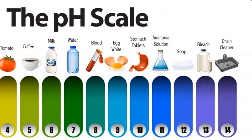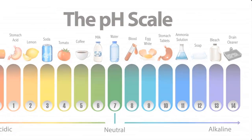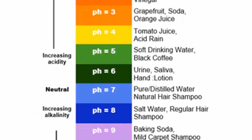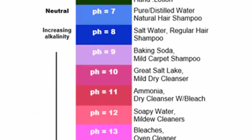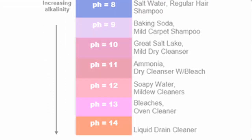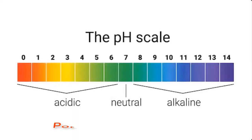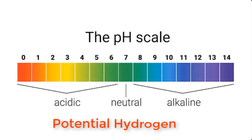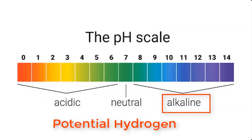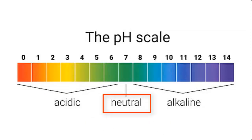Before we go into how to test the pH of your liquid soap or any other product, let's try to understand the basic chemistry of pH of a solution. pH, which literally means potential hydrogen, is a term used to describe the degree of acidity or alkalinity of a solution. A solution can either be acidic, alkaline, or neutral.